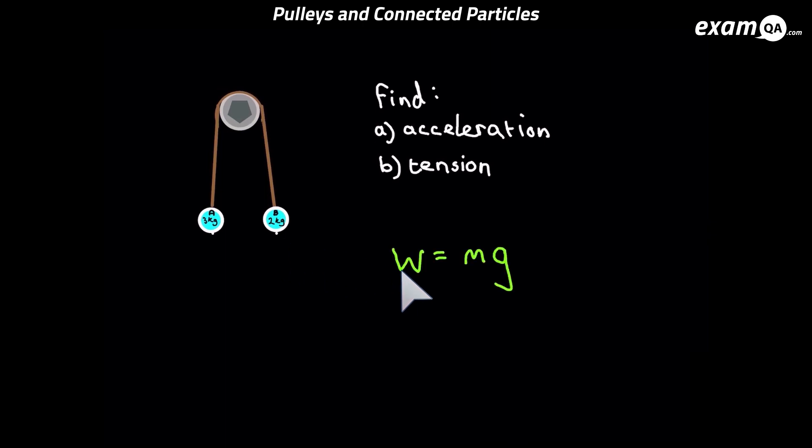So here we've got W equals MG, M being the mass of course, and G being the gravitational acceleration. We know that to be 9.8, but for these questions we just leave it as G. So here we've put those forces on the diagram, the weights.